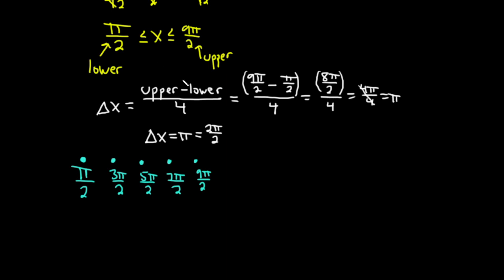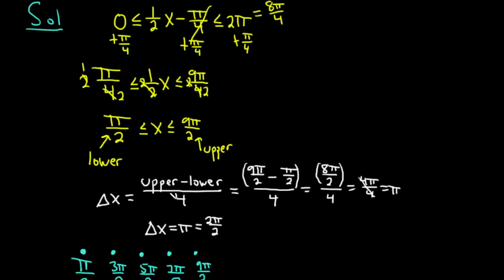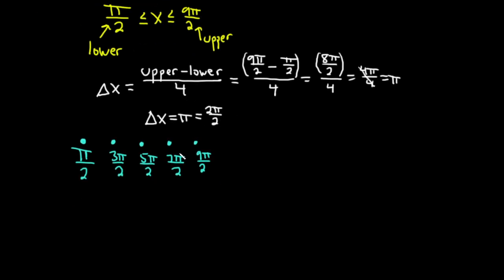It's a very simple procedure once you know it: take whatever is inside the function, set it between 0 and 2π, solve for x, then compute upper minus lower divided by 4 to get delta x. Keep adding delta x to the lower bound until you reach the upper bound. These are the five points we'll plug in and graph on this closed interval.